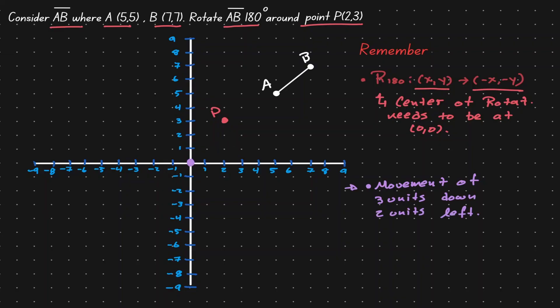The same movement we did for point P is the same movement we need to apply to every point in our problem. So let's take point A and move it 3 units down and 2 units to the left. Once we do that, we get a new location for A. Let's do the same for B — move it 3 units down and 2 units to the left — giving B a new location as well.